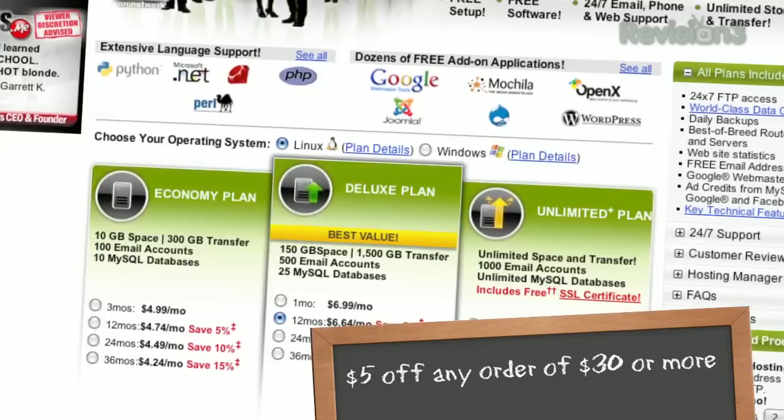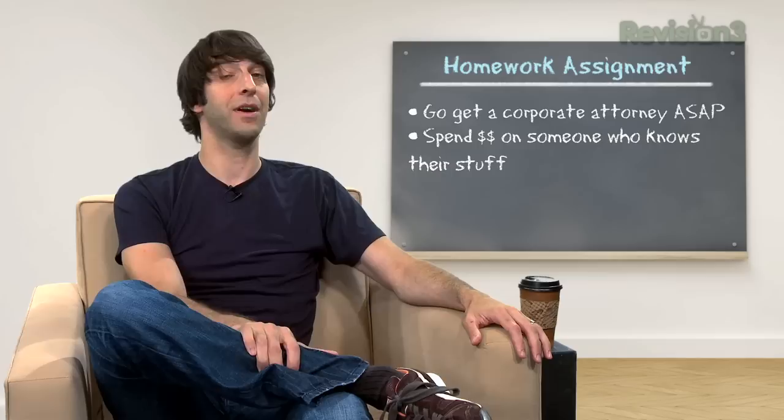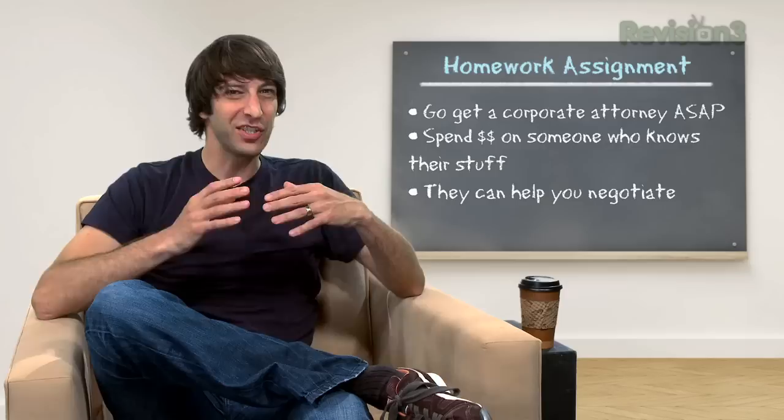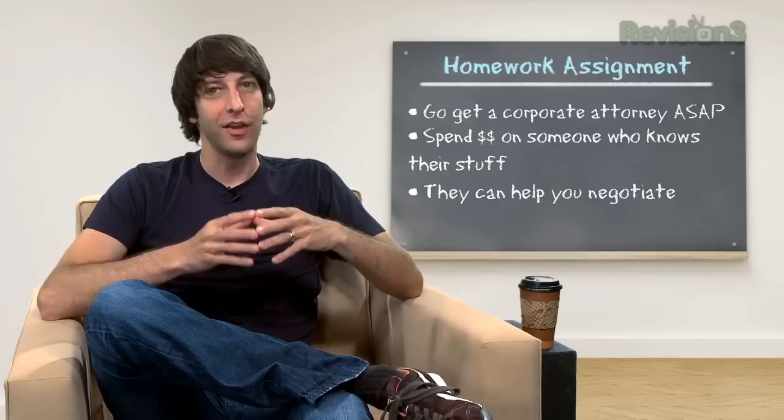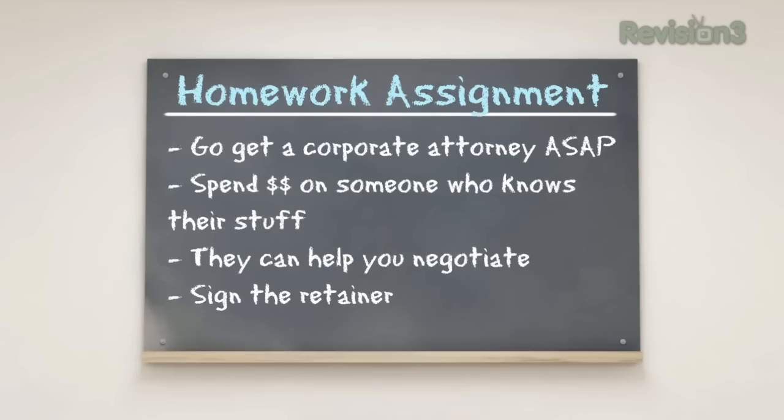Your homework assignment, in order to make sure your term sheet is absolutely the right one, is to go get a corporate attorney as soon as possible. I talk to all sorts of entrepreneurs who have really screwed themselves because they've read some blog with some downloadable thing and said that's enough. The truth be told, unless you have a qualified attorney — it doesn't have to be a super expensive one, but I think it's worth every penny to spend as much as $400 an hour on an attorney who really knows their stuff and has done this thousands and thousands of times — to look over those terms and help you negotiate them. Not just the final document, but during the process they can help you negotiate. Just imagine how many deals a corporate attorney in Silicon Valley has negotiated. That is hugely helpful. So go get a corporate attorney, sign that retainer, and begin working with them to prepare for this term sheet negotiation as soon as possible.